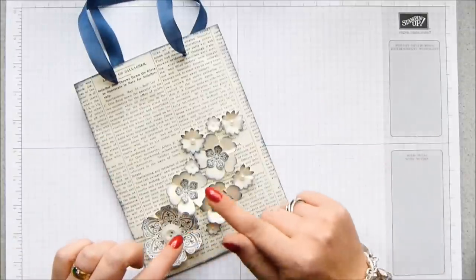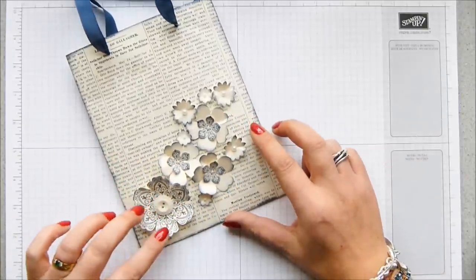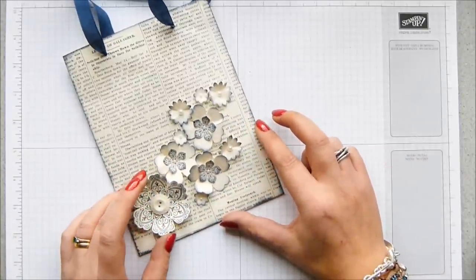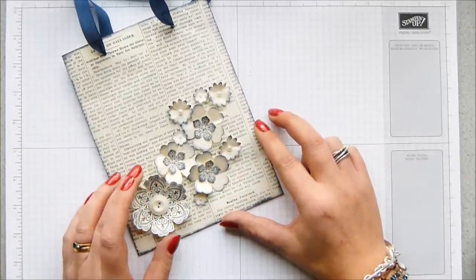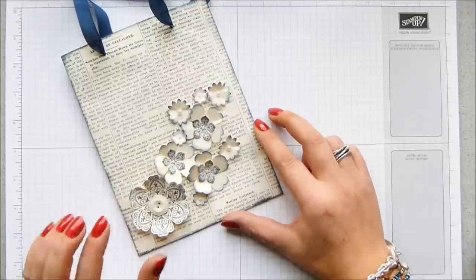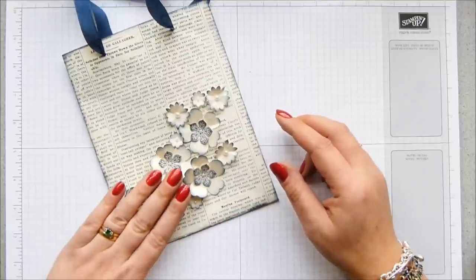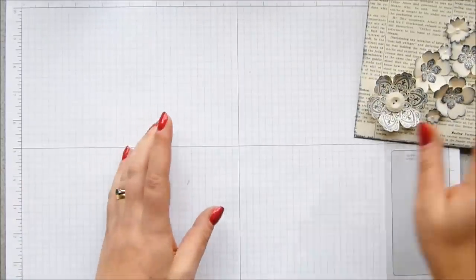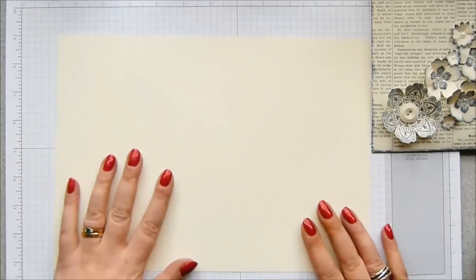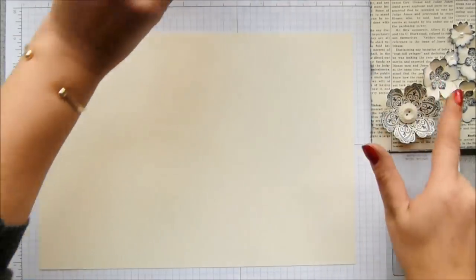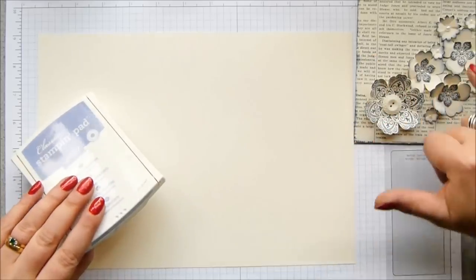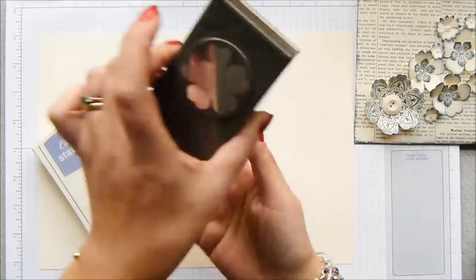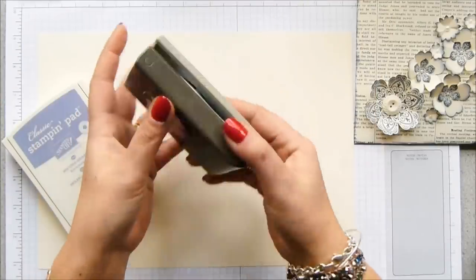So first thing I'm actually going to do is the stamping. I'm turning away looking at my shelves, it is called Mixed Bunch. I actually don't like the finished effect with that one so we're just going to do these ones this time around. Those were Night of Navy. I've got my Very Vanilla cardstock.